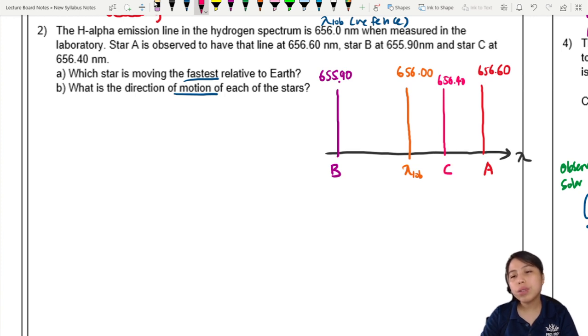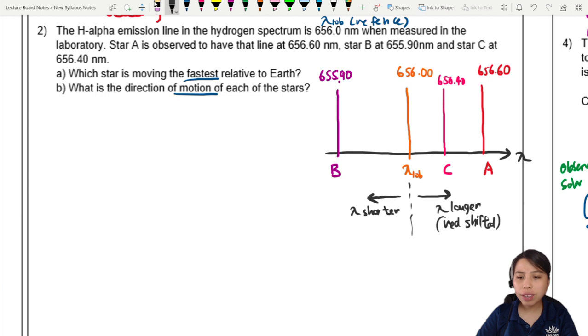Alright, so you see that at some points your wavelength becomes longer. These are the ones that are red shifted. And on the other hand, there's one star where the wavelength becomes shorter, 655 only. This is going to be blue shifted, which means it's moving away. So we're going to find which one is faster.